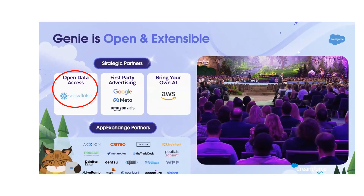At Dreamforce, it was announced that Snowflake is Genie's strategic partner to provide open data access and that Snowflake is Salesforce's marquee partner for data sharing with Genie. One other important thing discussed was how Iceberg is the key to Genie's openness.